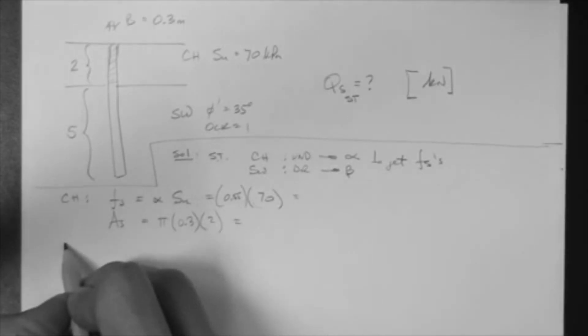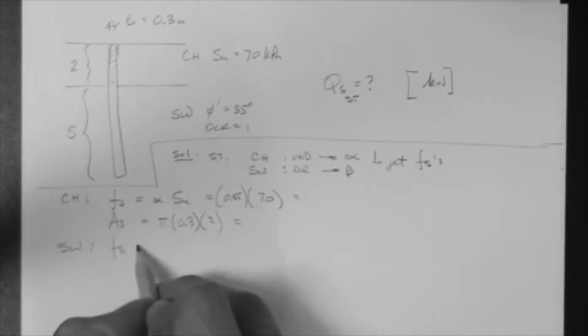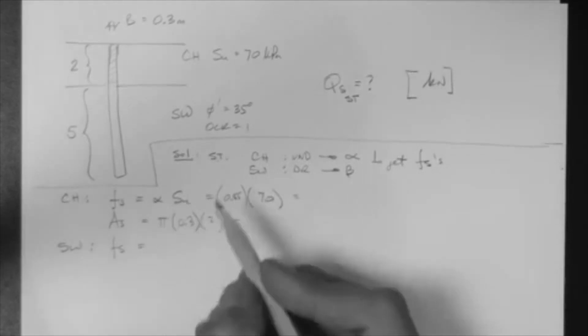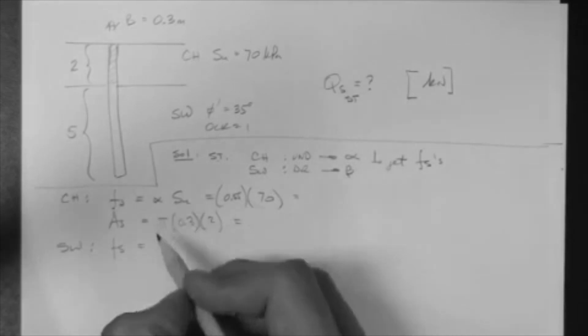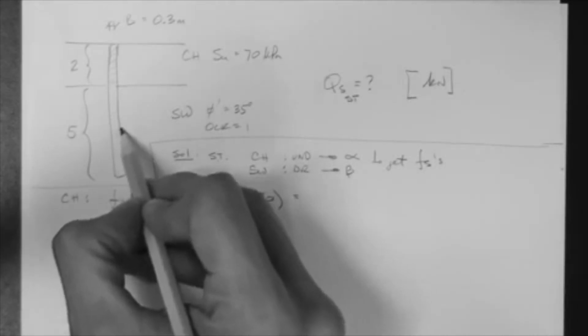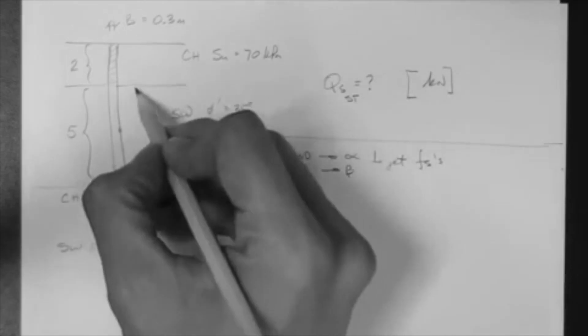For the well-graded sand, we use the beta method. The beta method tells us that we have the effective stress, right? Where's the point? Here. So this here is 2.5, times 2.5 plus 2 is 4.5.